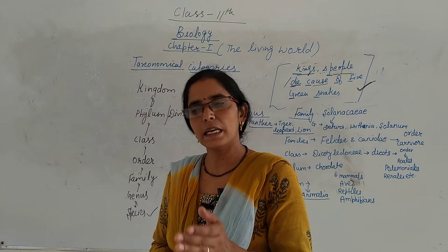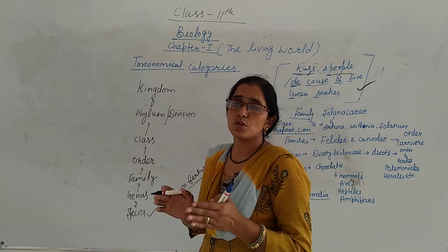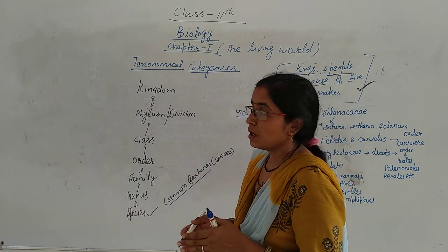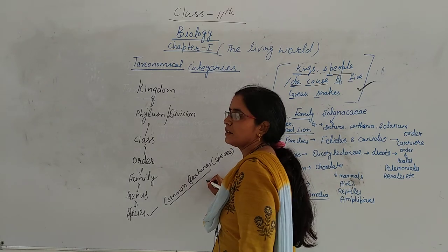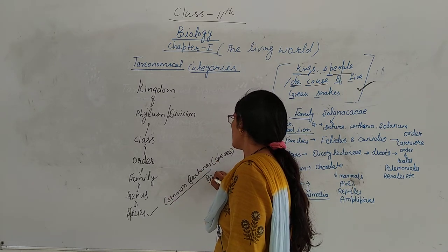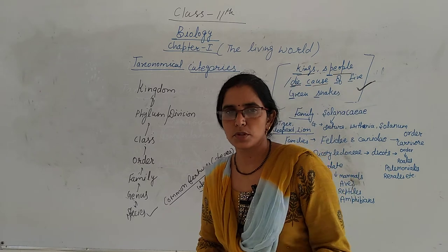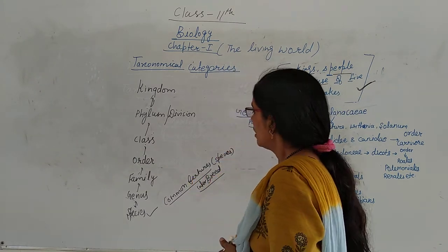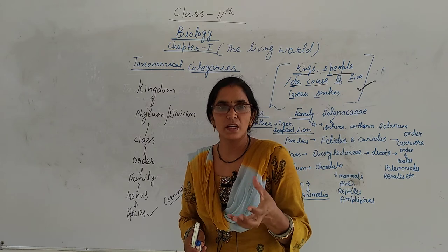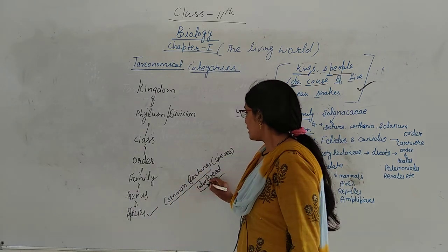If we talk about tiger species, it is different. A leopard species is different, a lion species is different, and a cat species is different. In a species, members share a lot of matching features. A special thing about species is interbreeding — members of the same species can breed with each other, meaning they are able to reproduce. So remember: species is the smallest taxonomical category, and its members can interbreed.